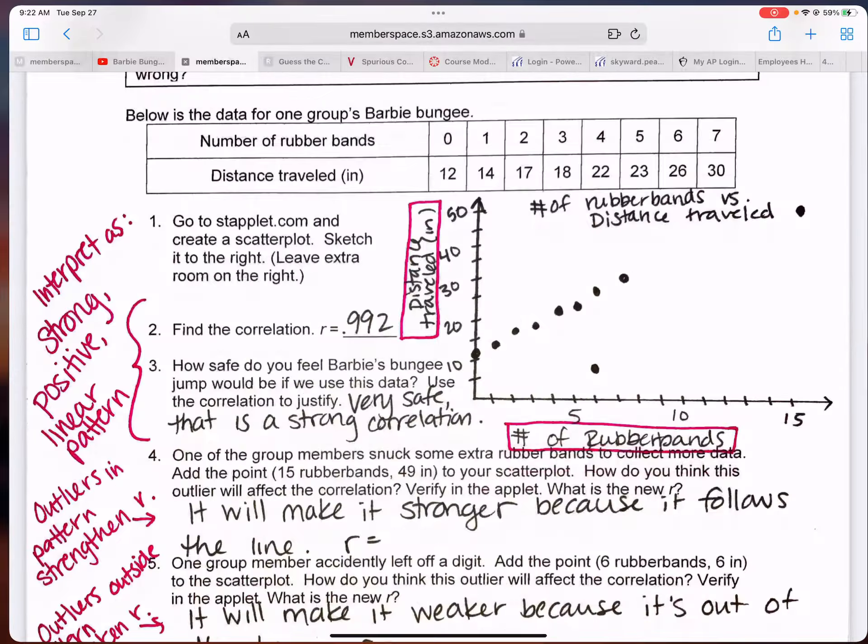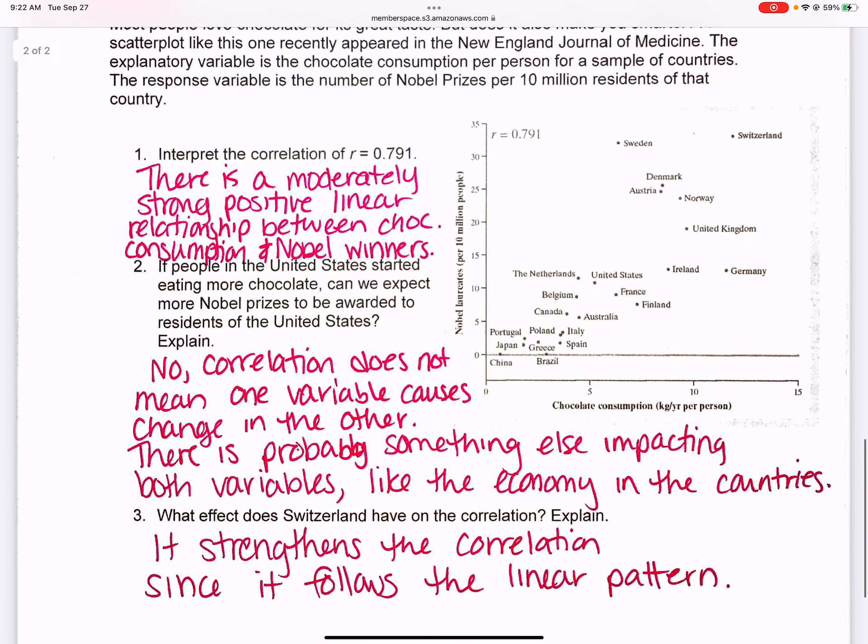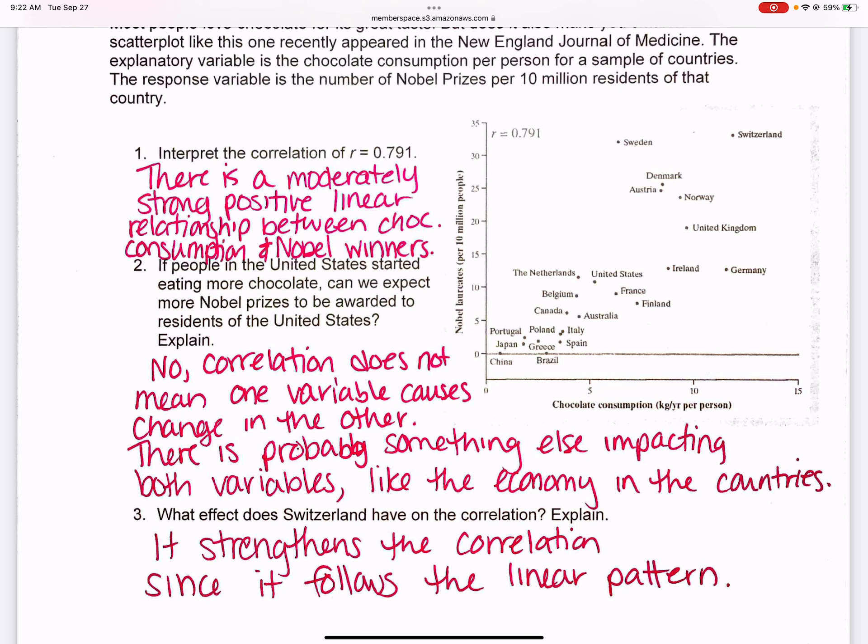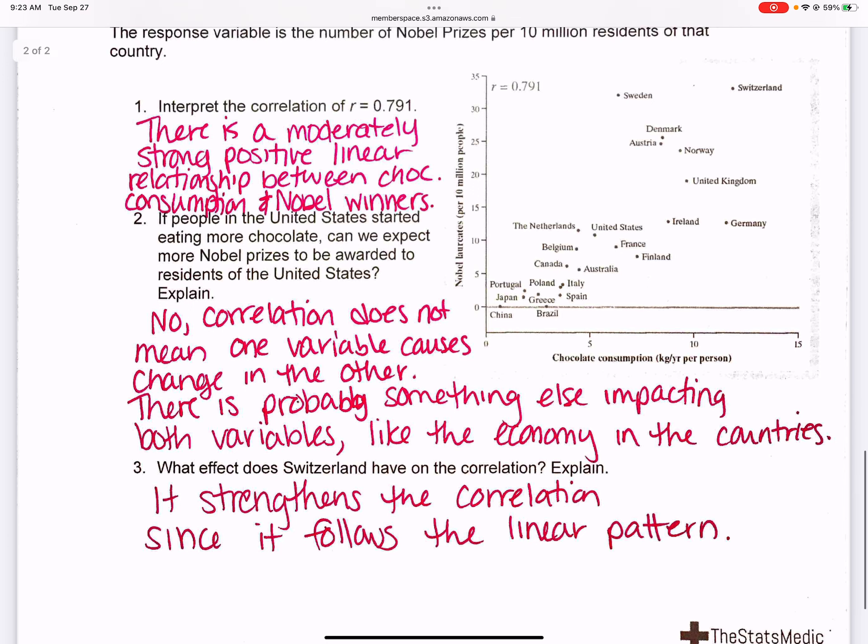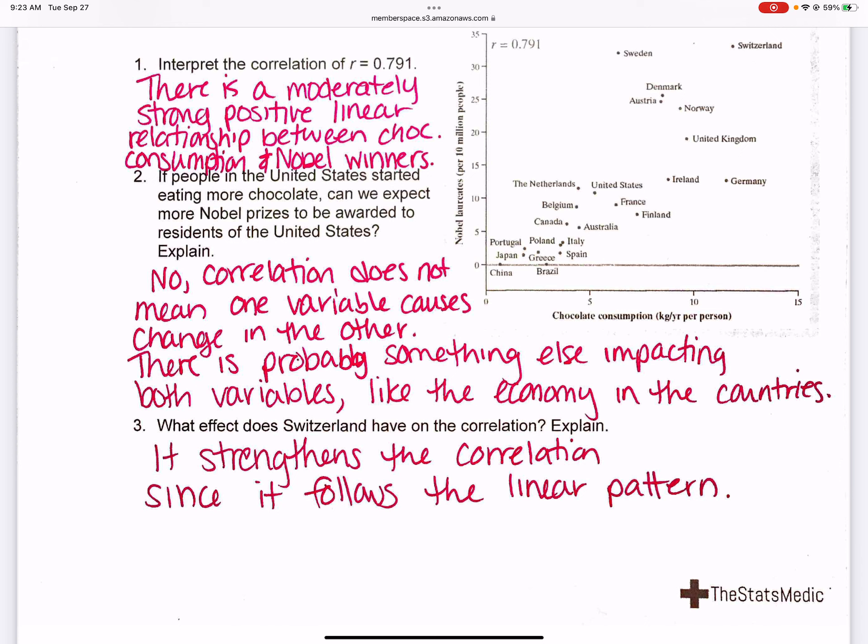Going back to now your check for understanding, if you haven't completed it, go ahead and complete it. Interpreting the correlation of 0.791, that shows there's a moderately strong linear relationship between chocolate consumption and Nobel Prize winners. For number 2, correlation does not imply causation, so it doesn't mean that one variable is causing the change in the other. One potential issue or solution of why this would be is because maybe it has something to do, something that impacts both variables, like economy in the country. So, for instance, a country, a first world country, has more money, better economy, people have more money, and then with more money often comes more education and more opportunity to be able to be potentially Nobel Prize winners. This is just one potential reason that this could be, that the chocolate consumption and Nobel Prize winners could have some sort of relationship. What effect does Switzerland have on the correlation? It strengthens the correlation since it's an outlier that follows the linear pattern.